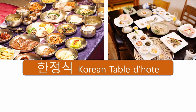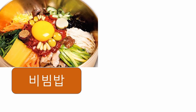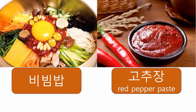This is 한정식 (Hanjungshik), a Korean table setting. These days we eat a lot of meat and fish at restaurants, but we have eaten a lot of vegetables at home. Bibimbap is the most representative Korean dish, made up of various vegetables and 고추장 (gochujang), red pepper paste. You can make unlimited kinds of bibimbap using the ingredients you want, just like a pizza.